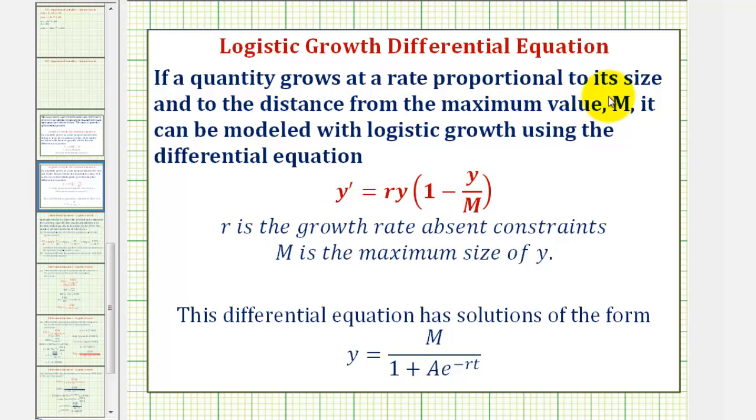If a quantity grows at a rate proportional to its size and to the distance from the maximum value M, it can be modeled with logistic growth using the differential equation y′ = ry(1 - y/M), where r is the growth rate absent constraints and M is the maximum size of y.